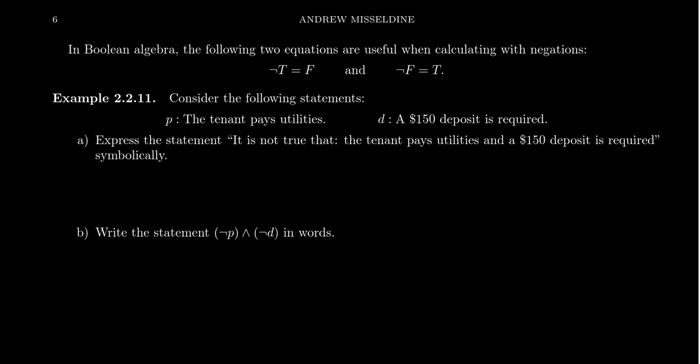As we worked with conjunctions and disjunctions before, it's important to see how this operation works with the two values a statement can take on. If you are not true, that means you're false. And if you're not false, that means you're true. So the negation is like a light switch — you toggle on, off, on, off; true, false, true, false. It switches between them. So it's very important, as budding logicians, to be able to negate statements.